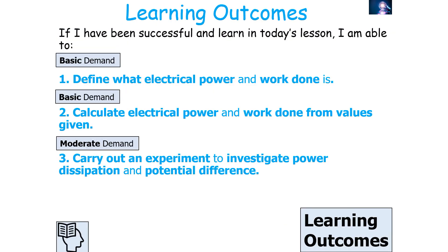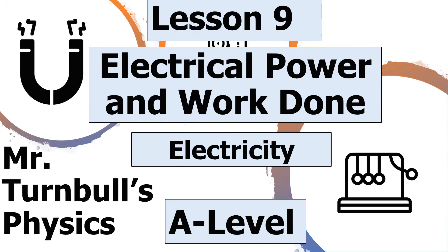If we've been successful in today's lesson, we should be able to define electrical power and electrical work done, calculate them from given values, and carry out investigations to calculate power dissipation and potential difference. Thank you very much for watching this lesson on electrical power and work done, part of the electricity topic in AQA A-level physics. Have a lovely day.